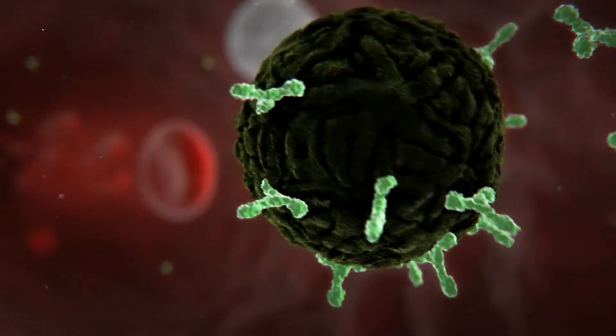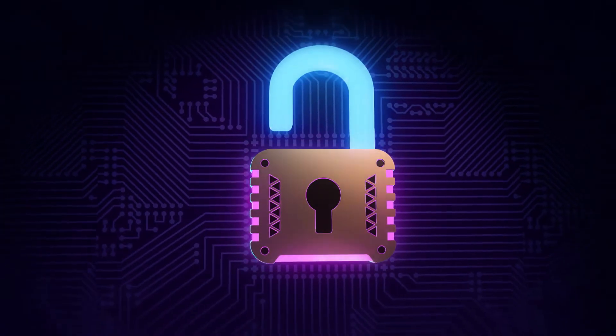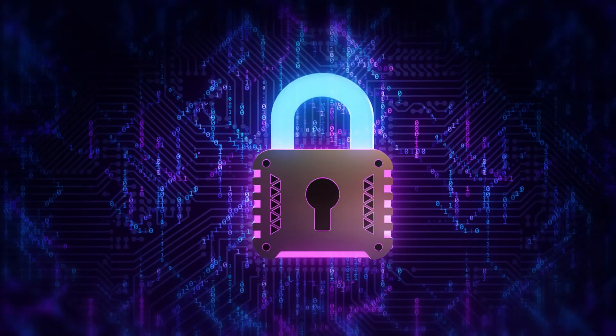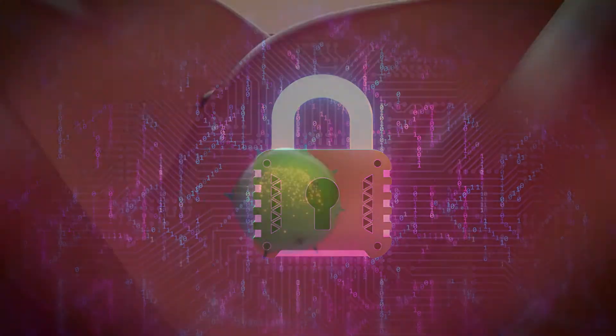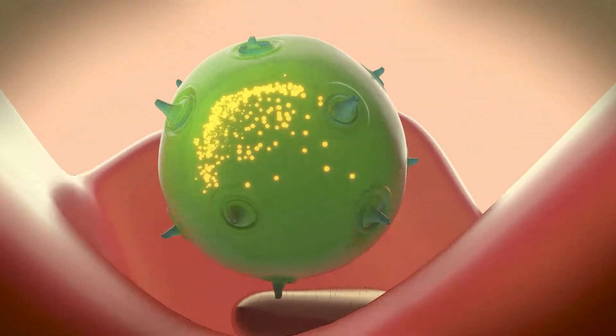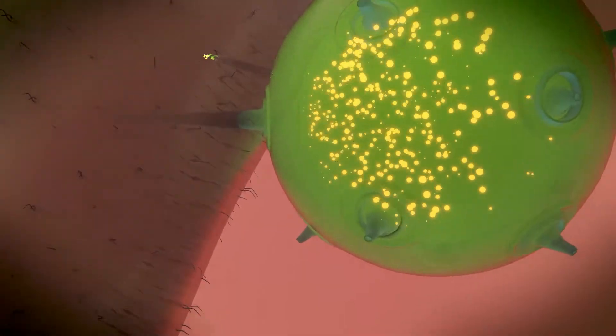The immune system keeps a record of every microbe it has ever defeated. This means it can recognize and destroy the microbe quickly if it enters the body again before it can multiply and make you feel unwell.